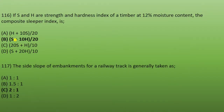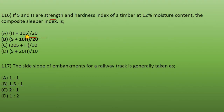Next: if SNH is the strength and hardness index of timber at 12% moisture content, the composite sleeper index formula is: (S + 10H) divided by 20. This formula we studied in our sleeper video where we covered wooden sleepers.